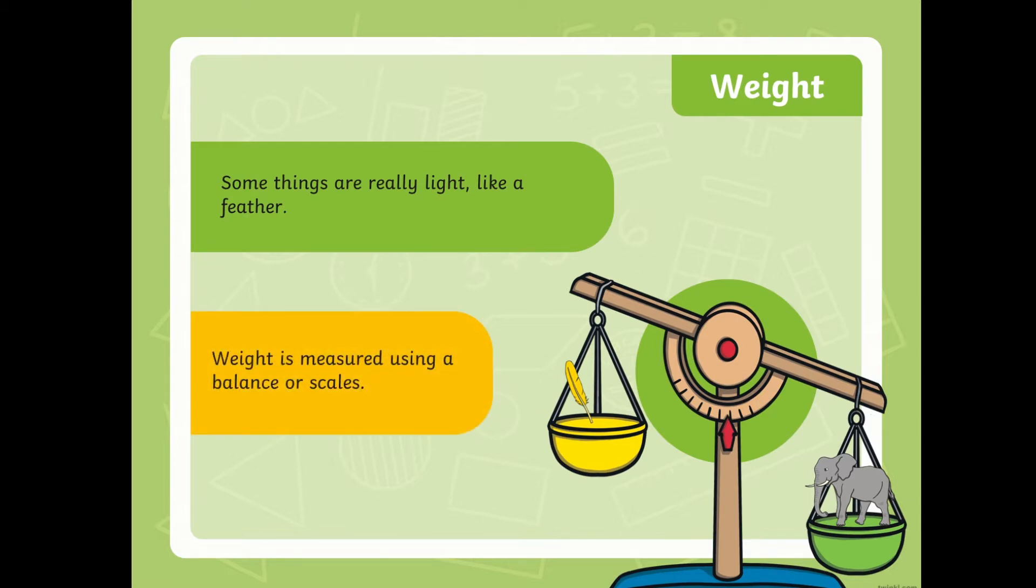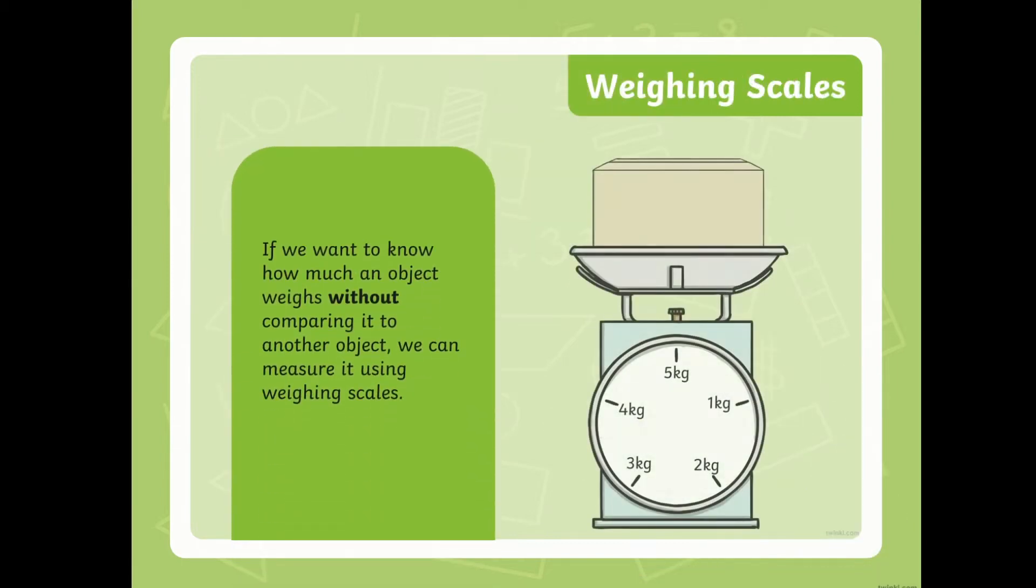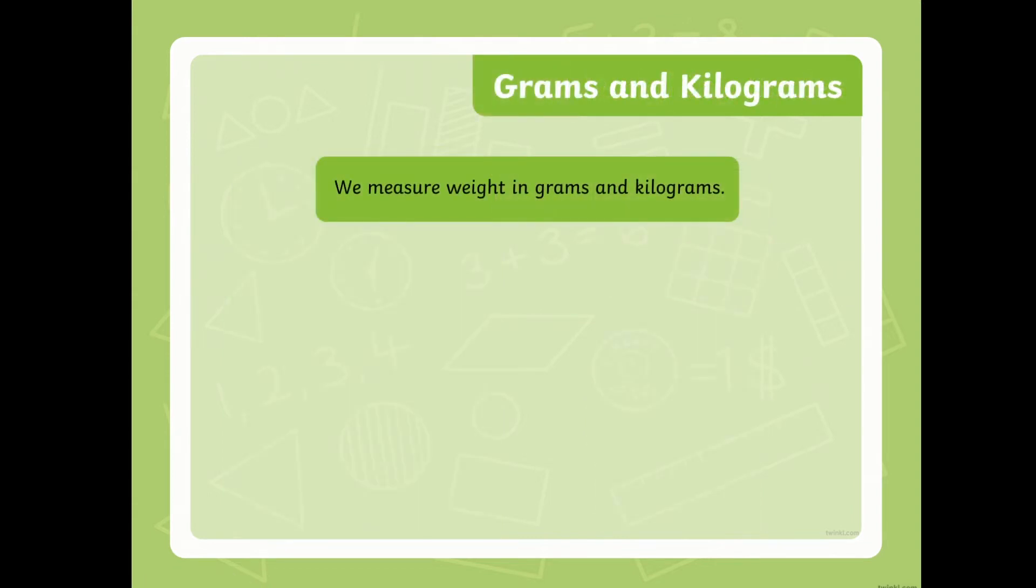Weight is measured using a balance or scale. If we want to know how much an object weighs without comparing it to another object, we can measure it using weighing scale. So, this is our weighing scale. And look, you have to watch where the hand goes.